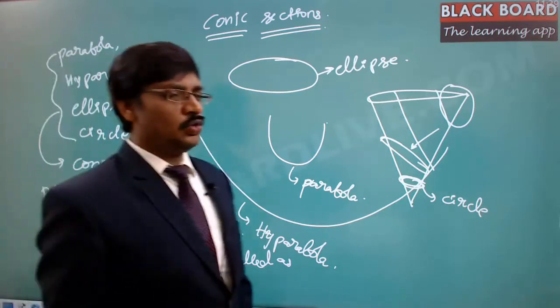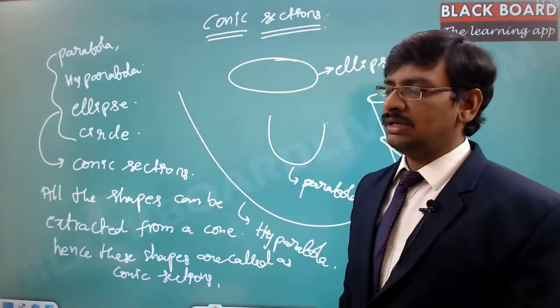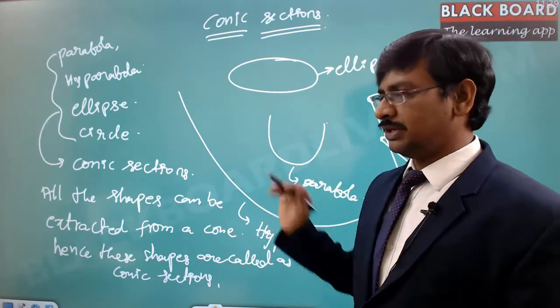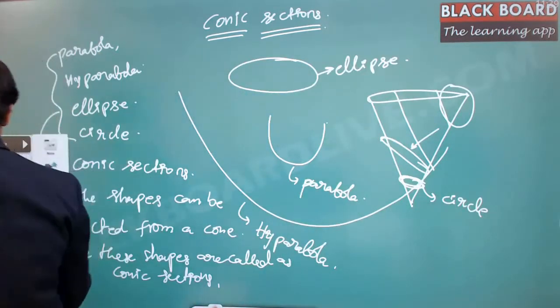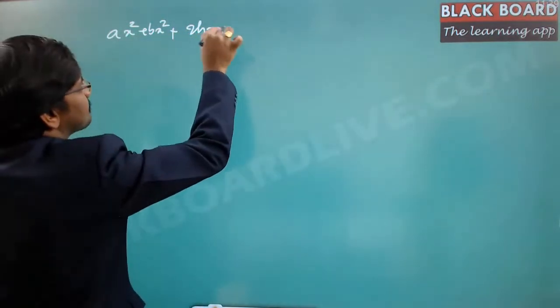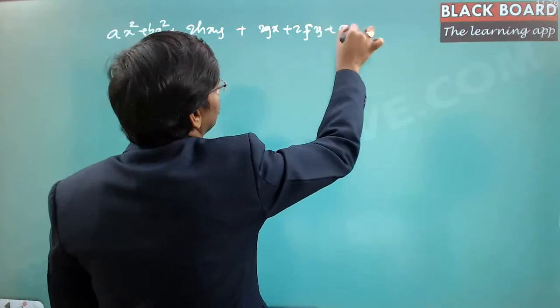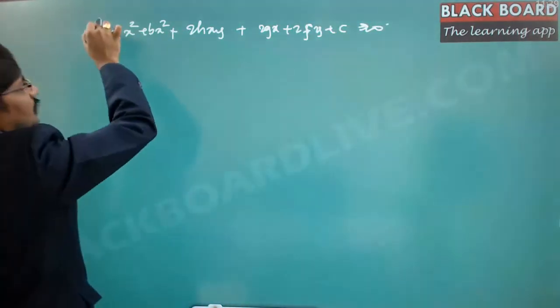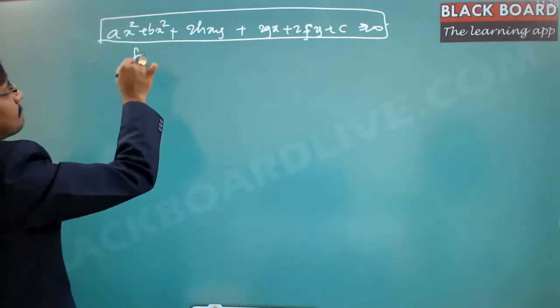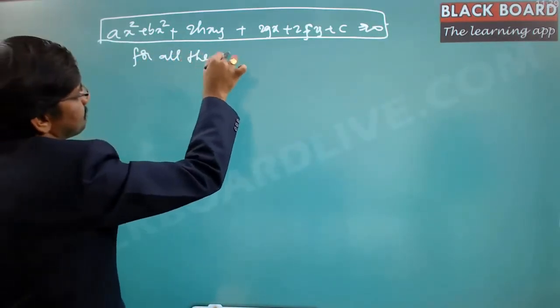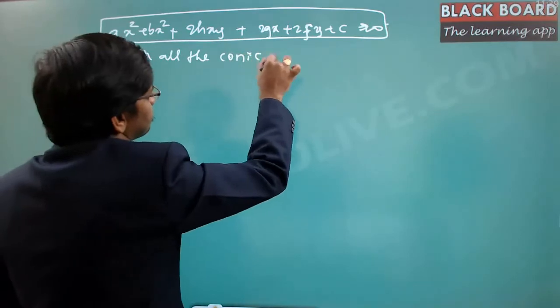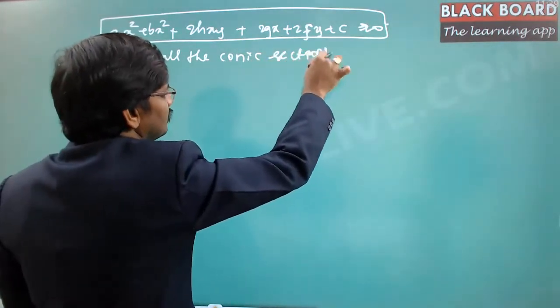Now, why do we study all these shapes together? Because the equation for all these shapes is always in the generalized form: Ax² + Bx² + 2Hxy + 2Gx + 2Fy + C = 0. This is the generalized equation for all the conic sections.